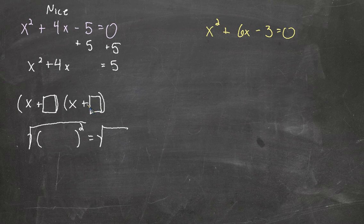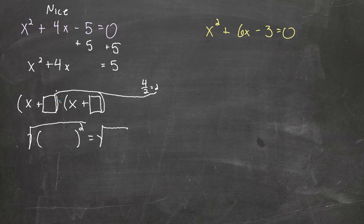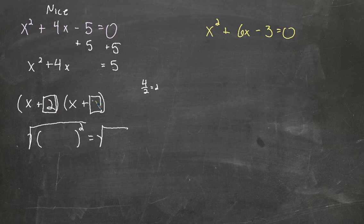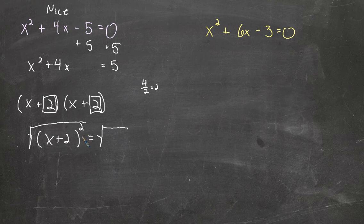Half is very important here. We always take this number multiplied by x, divide it by 2, and that's the number that goes in both identical factors — a 2 and a 2. The whole motivation here is that I now can write it as x plus 2 squared, take the square root of it, and that makes solving it pretty easy.